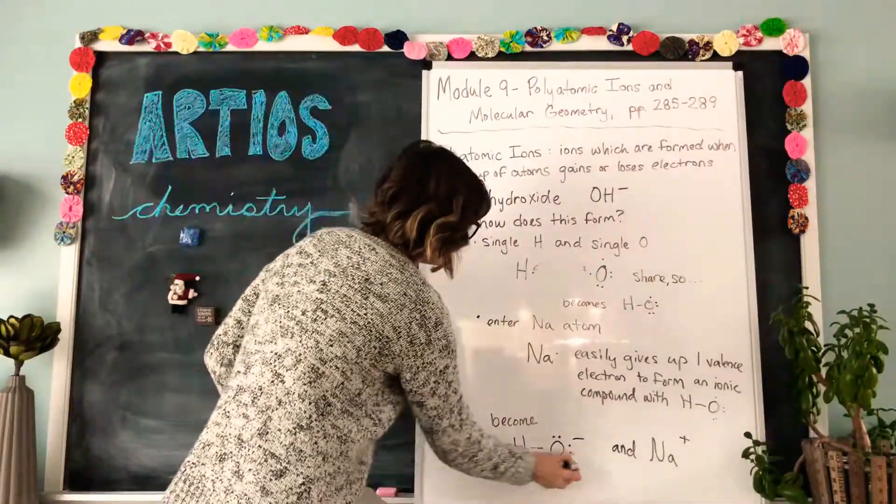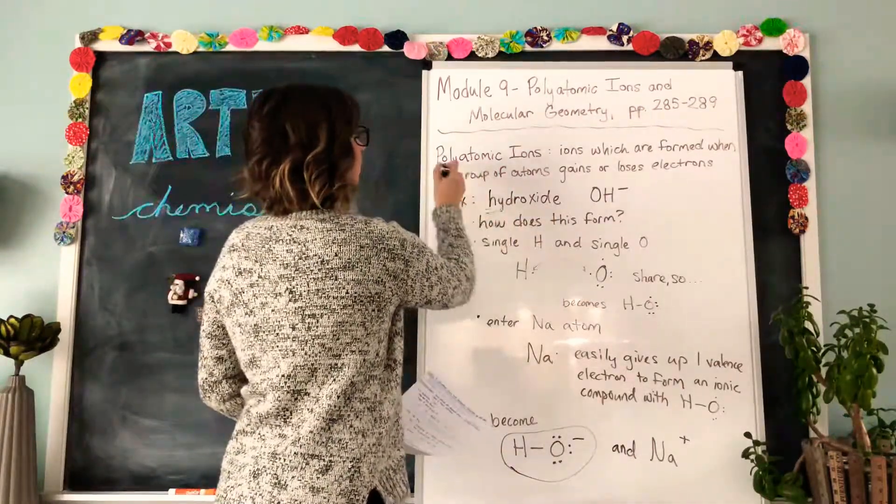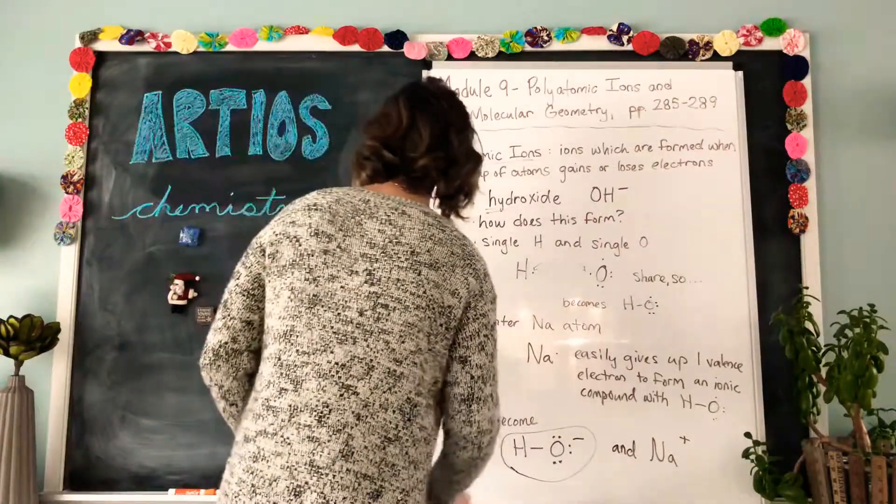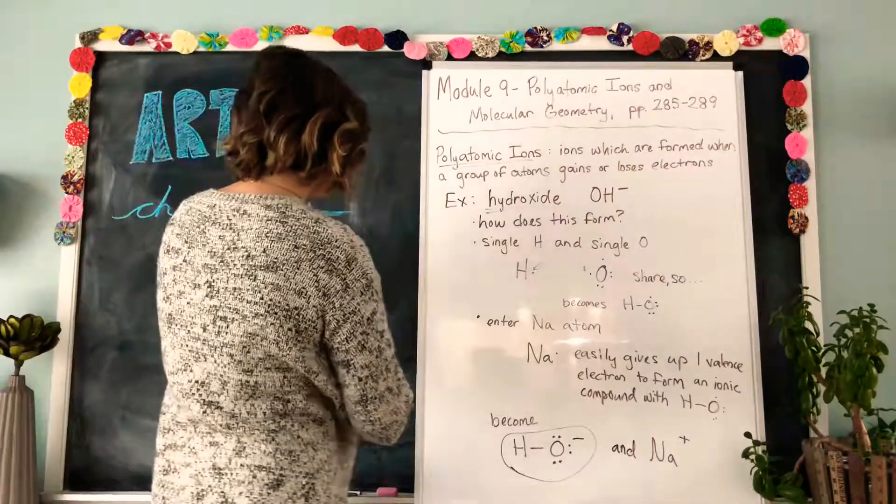So this is what we call hydroxide, which is a polyatomic ion, and that's our first example and definition. Now let me erase this and we will move on.